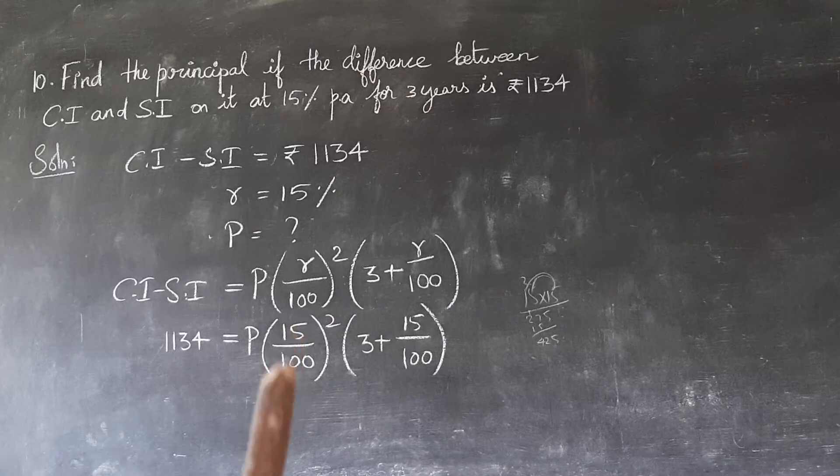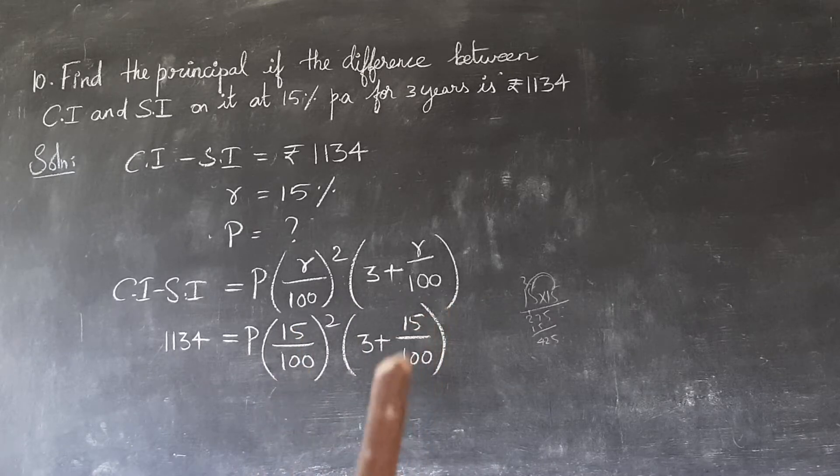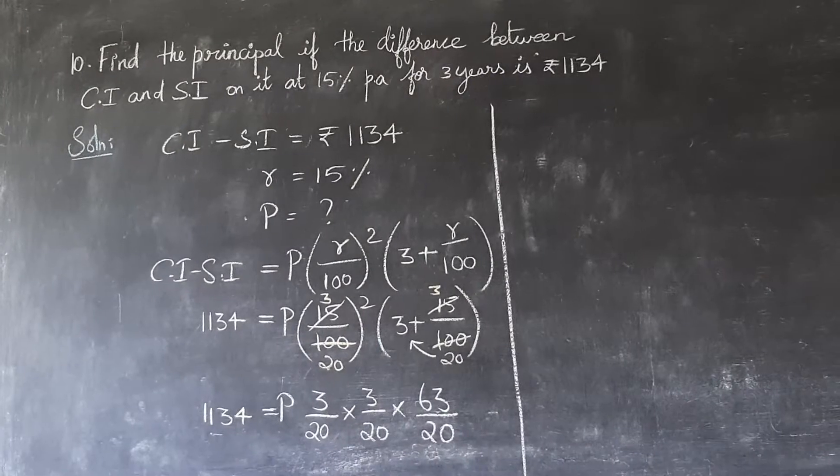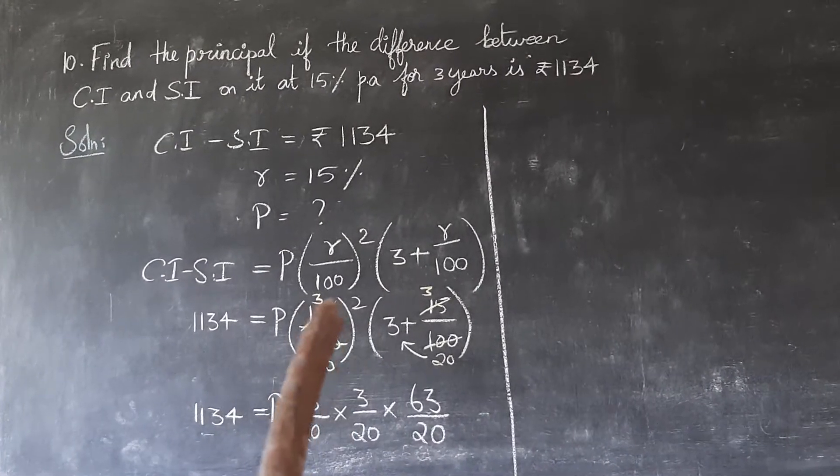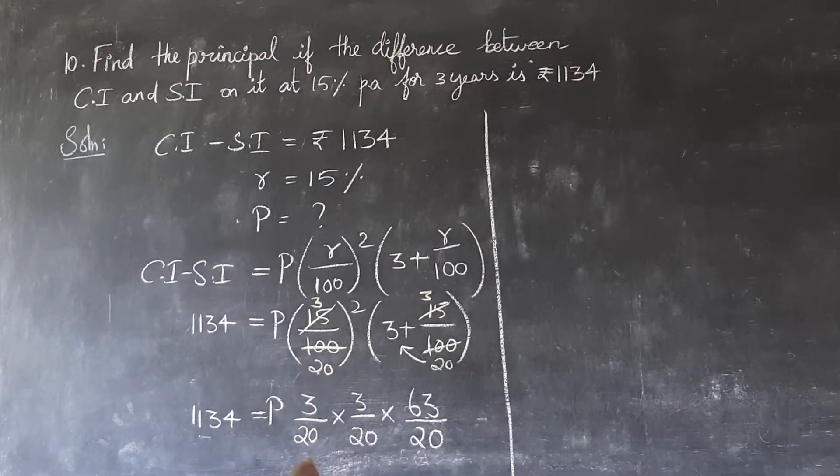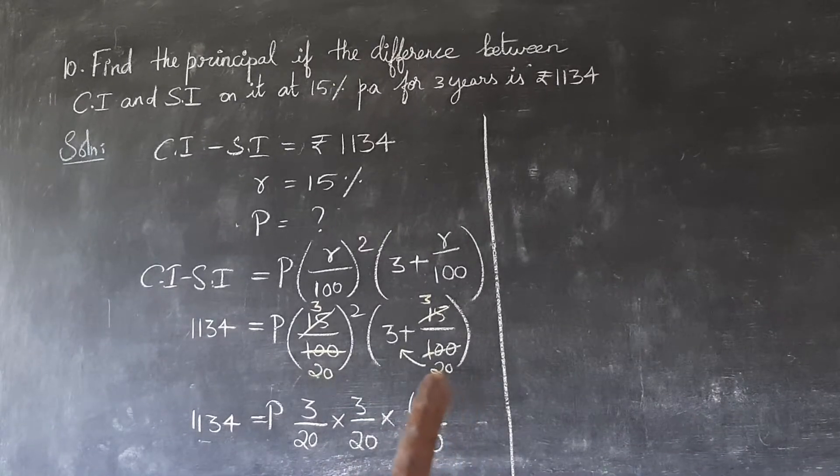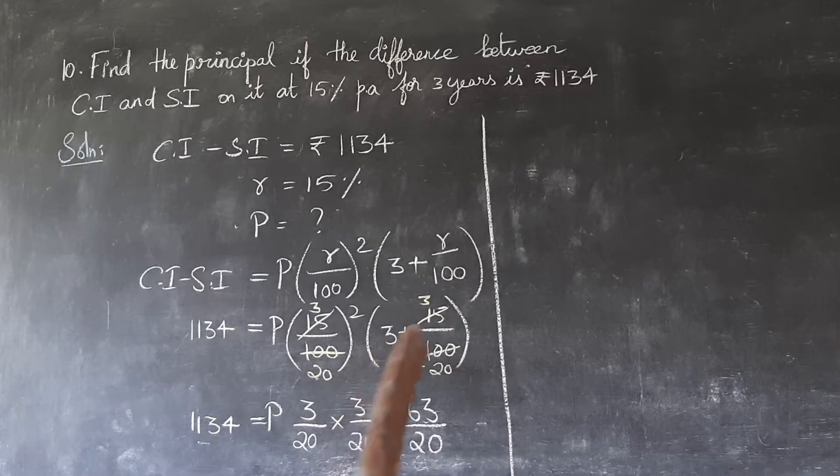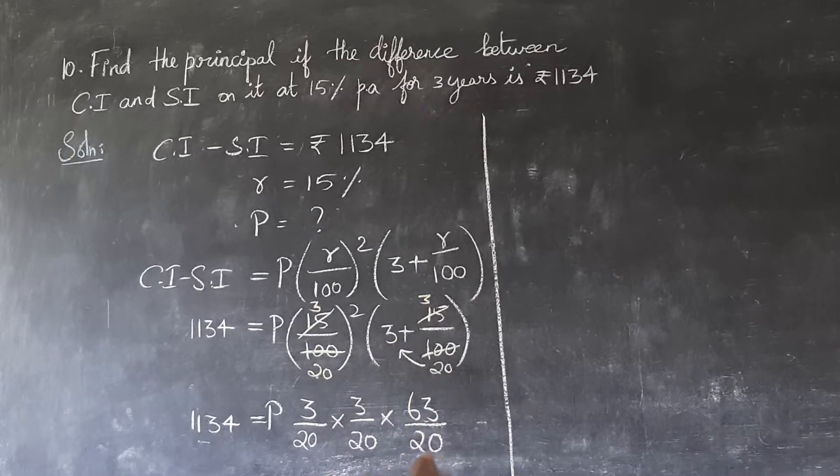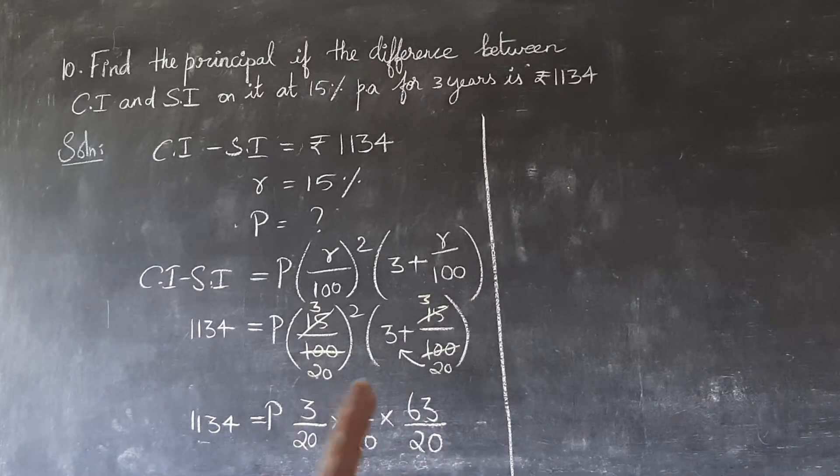Now 15 and 100 can be cancelled using 5 table: 5 threes are 15 and 5 twenties are 100. Now we have (3/20) whole square, which is 3/20 times 3/20. And here, the denominator is 20 into 3, which is 60, plus 3 equals 63/20.